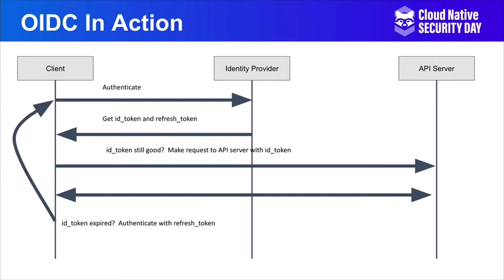Once you're authenticated, you can do your secure stuff. When the ID token expires — it's been a minute — you need a new token, so you authenticate with the refresh token. This all happens with KubeControl behind the scenes. That refresh token is one-time use: once it's used, it's burned and you can't use it again. You get a new refresh token and a new ID token. Rinse and repeat until you're done doing your work for the day.